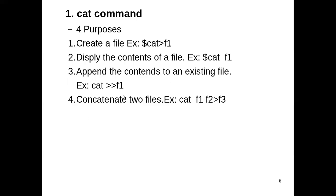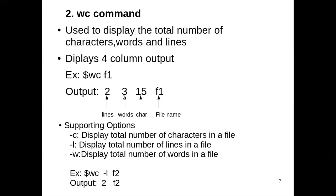So these are the four purposes of the cat command. Next is the wc command. Wc means word count. As the name indicates, the wc command is used to get the number of words, the number of characters, and the number of lines of a particular file. By default, wc command displays four-column output. The command is wc followed by the file name, and the output contains four columns: the first column is number of lines, second is number of words, third is number of characters, and the fourth is the name of the file.